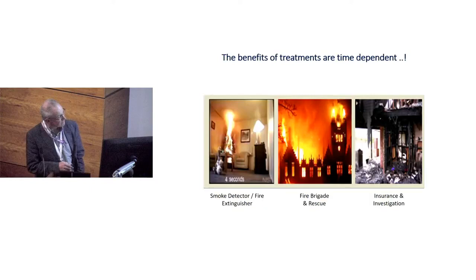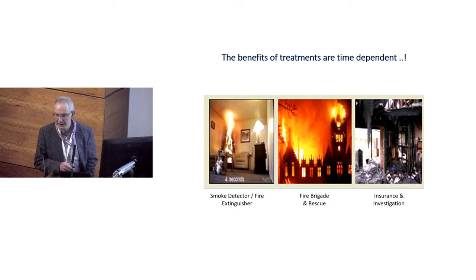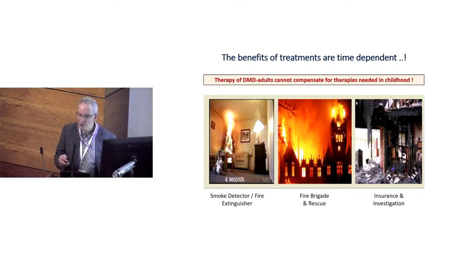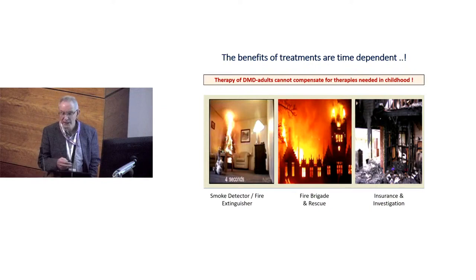A key message from the conventional treatment point of view is that you can't compensate for what you didn't do in childhood by over-treatment in adulthood. If you miss the boat, you've missed the boat. You need to get treatments in early — not because you're replacing dystrophin, but to get all the benefits of reducing the strain and progressive deterioration of the heart.